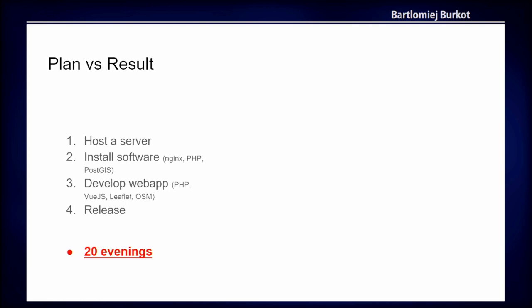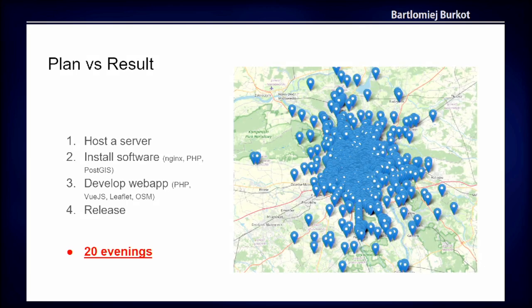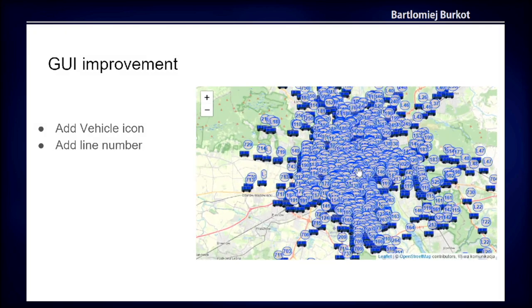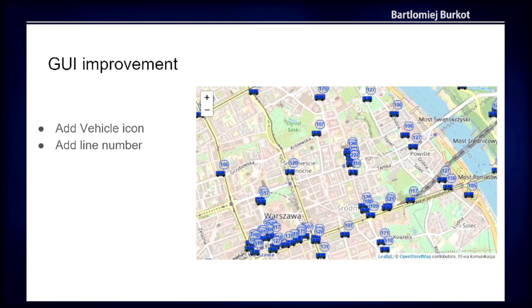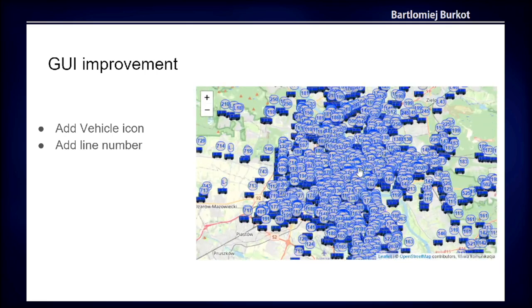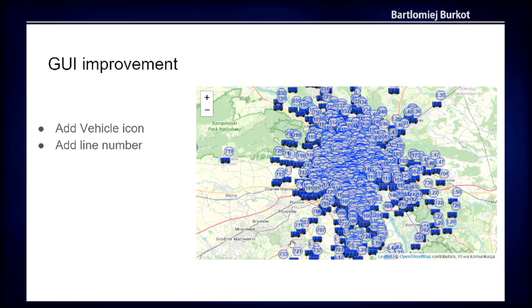I hosted the server, I developed the application, deployed it, and after 20 evenings I got the following result. When we look at the map we see information which from the first look we don't know what it is. There are points, the standard markers — the information is not presented in a convenient way and also the performance was very bad, especially on mobile devices. Sometimes the markers disappeared and appeared again and the user didn't know what was happening. So I decided to put more effort into the development and improve the user experience and the presentation of the information on the map.